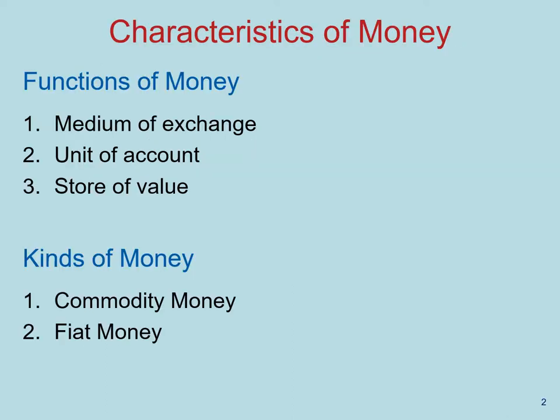On to the functions of money. Money can be a medium of exchange, a unit of account, or a store of value. As a medium of exchange, money is the item that buyers give sellers when they want to purchase goods and services. It works as a unit of account because it's the yardstick that people use to post prices and record debts.